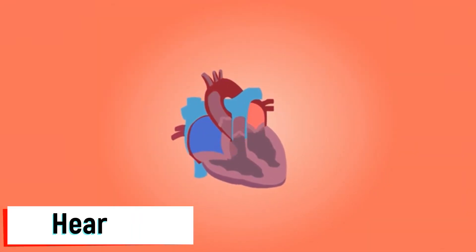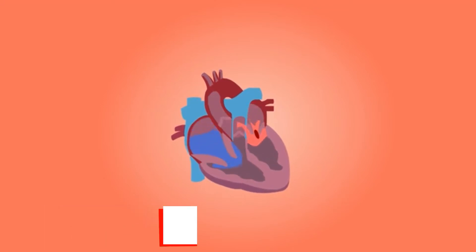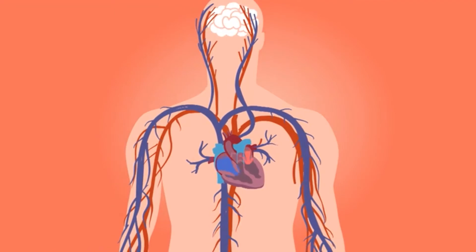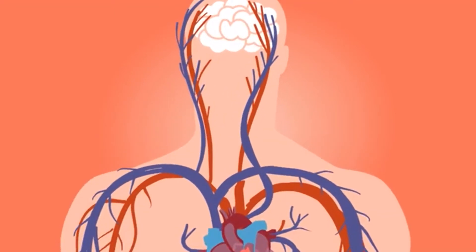The heart is at the center of the circulatory system. It is a muscular organ located slightly to the left of the middle of the chest. It is the size of a clenched fist. It is like a machine that pumps blood to the rest of the body.